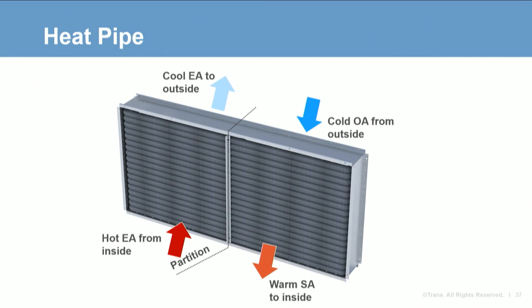The next technology is heat pipes. A heat pipe is like a coil loop but not quite as flexible. The typical configuration requires the airflows to be side by side. Each assembly contains multiple heat pipes, each an independent sealed tube filled with a heat transfer fluid, often refrigerant. A partition divides the heat pipe into separate evaporator and condenser sections. To control heat recovery, units may include bypass dampers to route air around the heat pipe, or valves to restrict the flow of refrigerant.